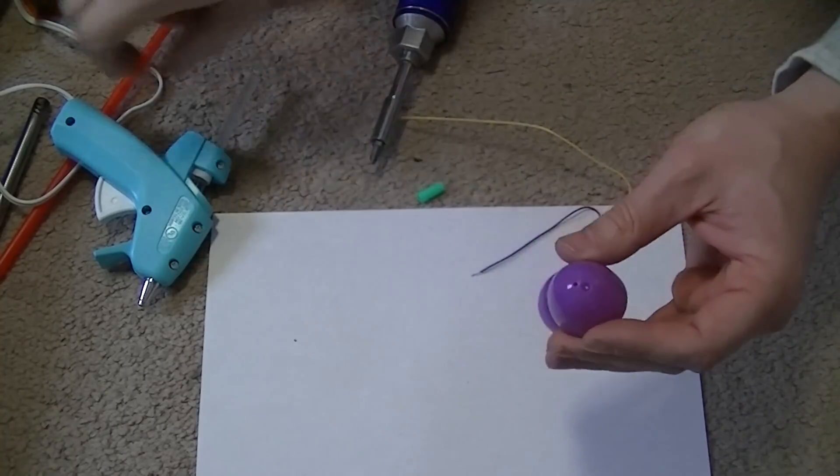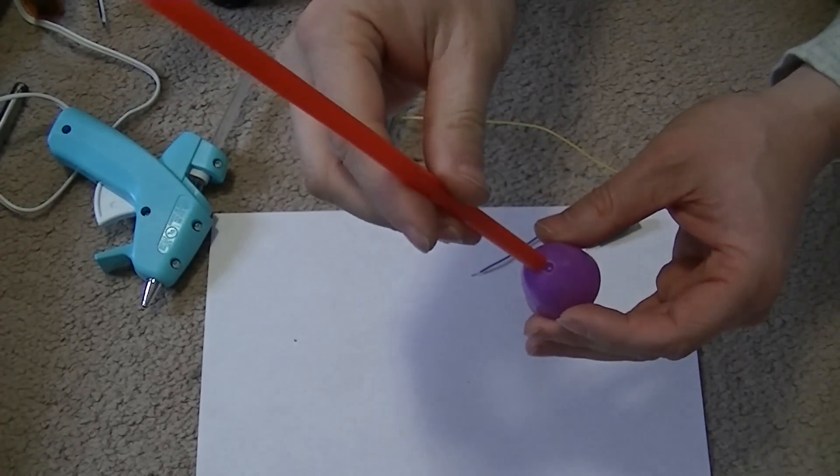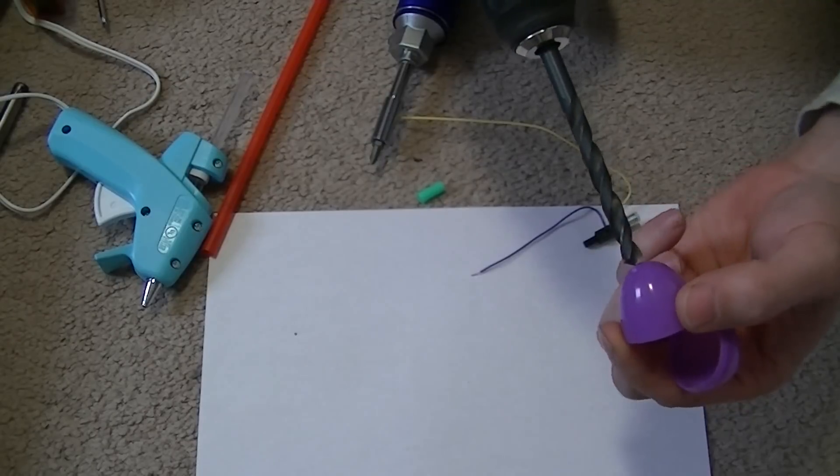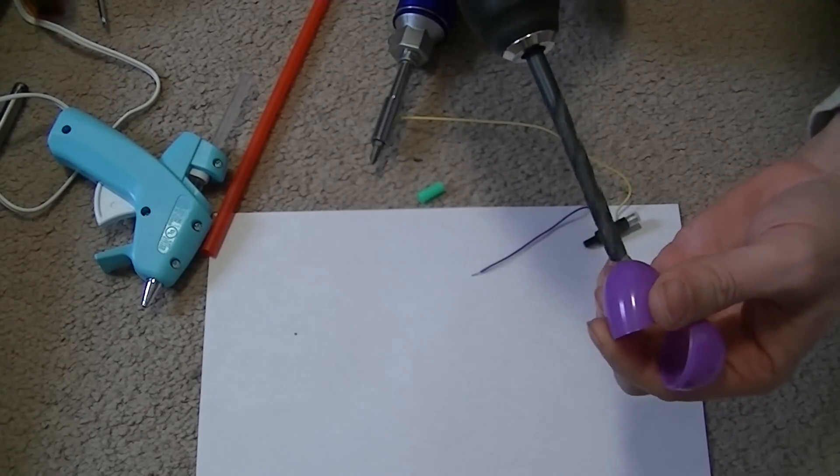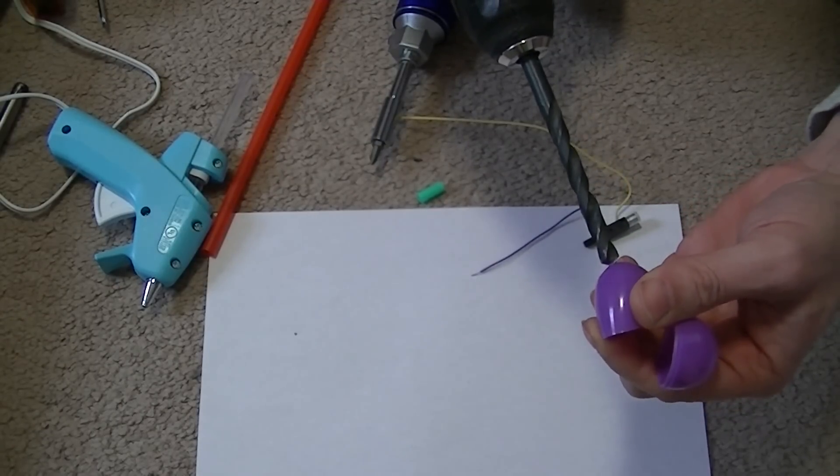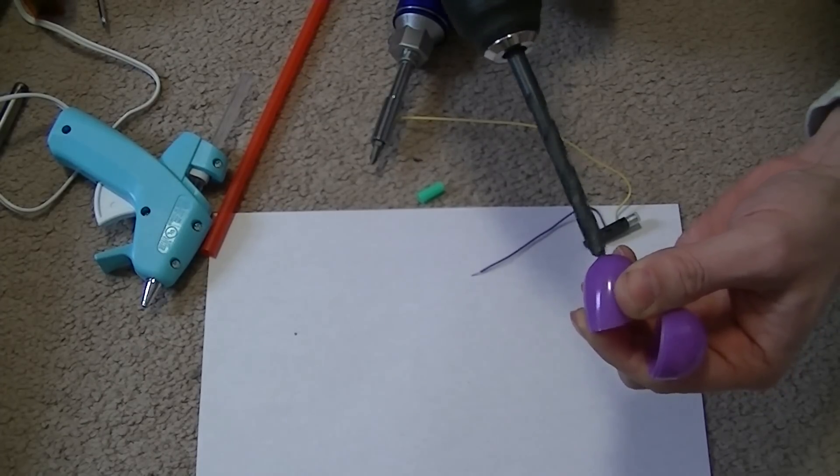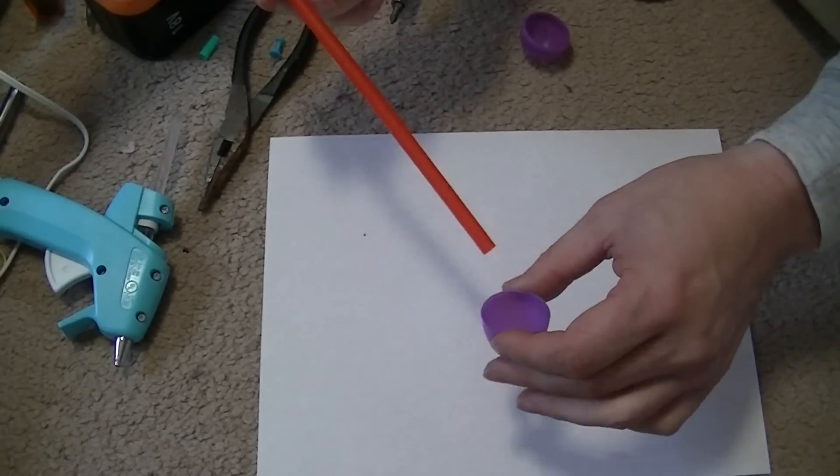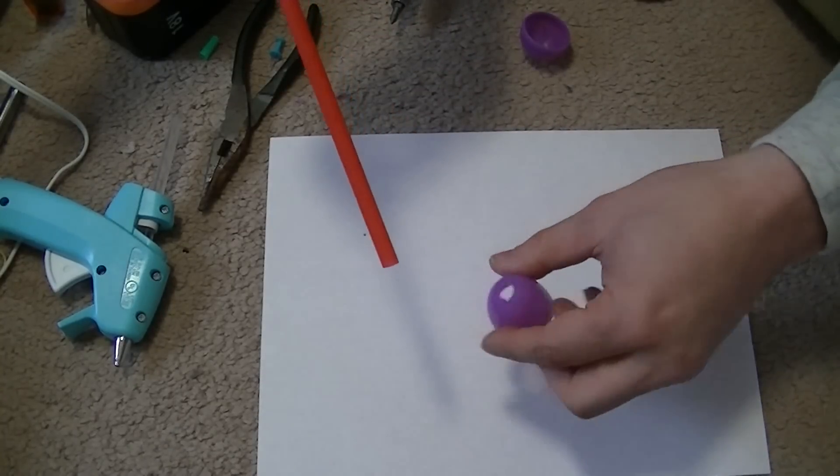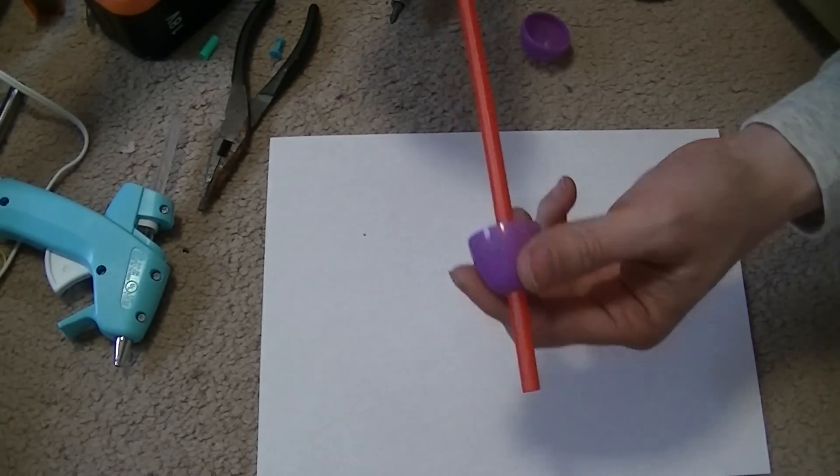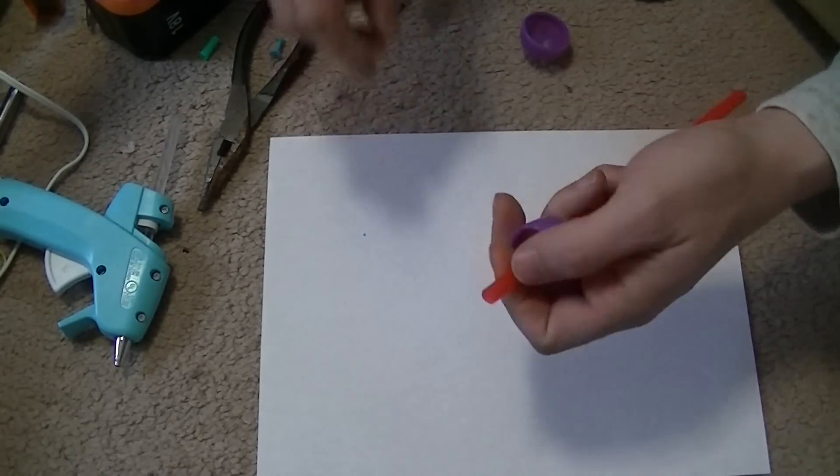I'm going to take this and drill it out big enough to get the straw in. You have to be very careful you don't drill your fingers. You can use a dremel for this. Now we're going to take our straw and push it from this end through to there.